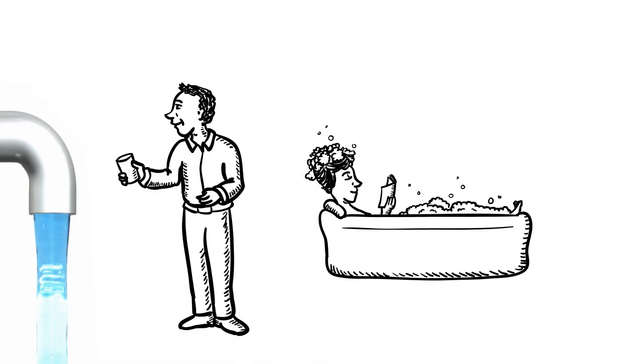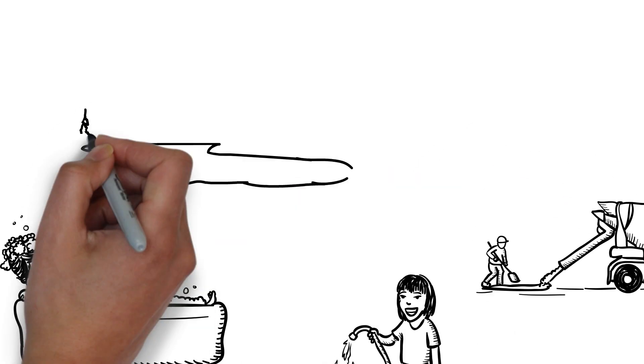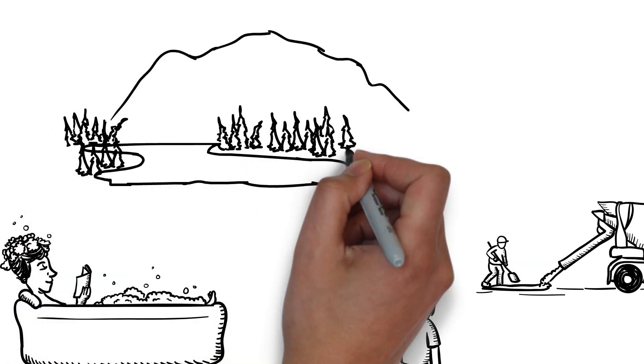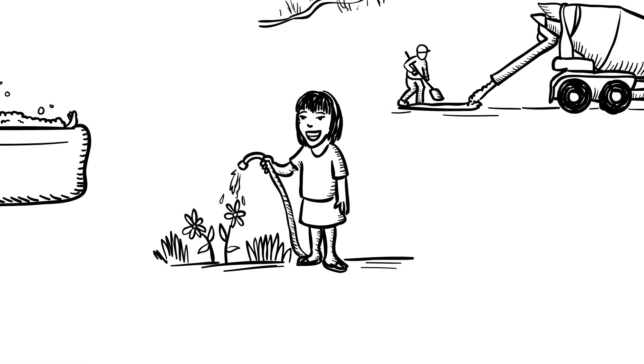Everybody in British Columbia uses water every single day. We have a lot of fresh water that we can see in lakes, rivers and streams, but we also have a lot of water hidden underground. It's called groundwater.